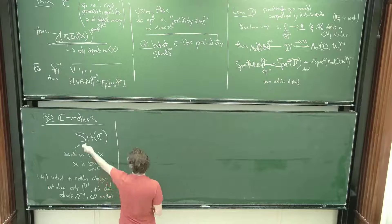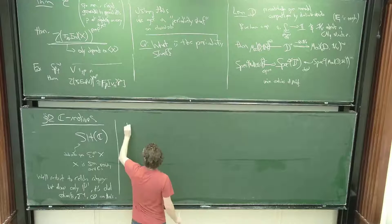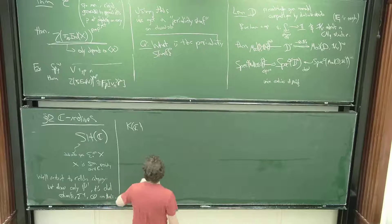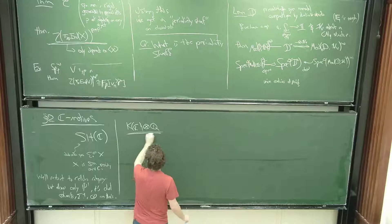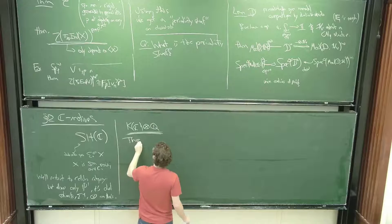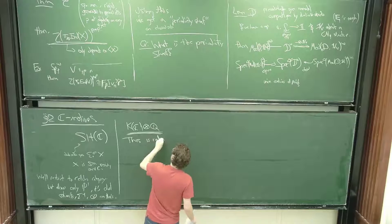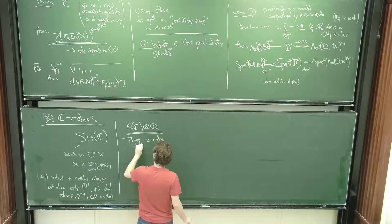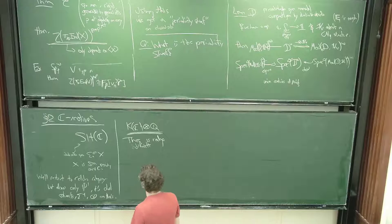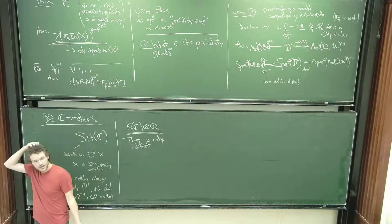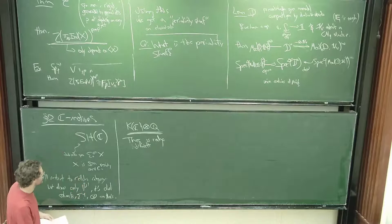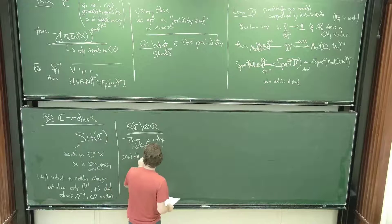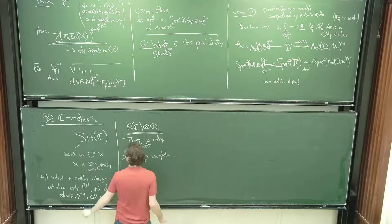There's another issue: if I take the algebraic K-theory, this category isn't going to know about algebraic K-theory well. If I take K(C) and rationalize it, this is really hard to understand — the rational K-theory of C is difficult to get a handle on. That extends to this whole category if I don't rationalize. So we'll P-complete.